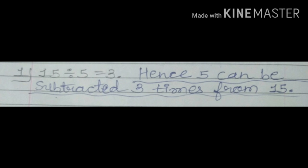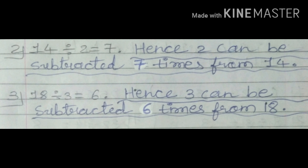Let's see number 2: 14 divided by 2 is equal to 7. This means if we divide 14 by 2 the answer is 7. Hence, 2 can be subtracted 7 times from 14. This means we can subtract 2 from 14 seven times. So first we write which number to subtract — 2 — how many times — 7 times — and from which number — 14. So we write: Hence, 2 can be subtracted 7 times from 14.